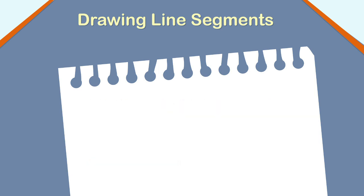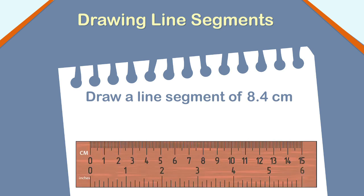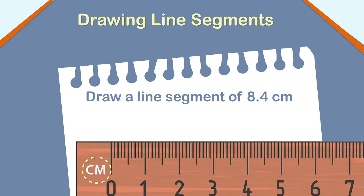Now, let us get a little more complex. Let us see how to draw a line segment measuring 8.4 centimeter. Look at the ruler closely. The ruler has markings in centimeters. Each centimeter is divided into 10 smaller divisions. Each small division is equal to 1 millimeter. So, 1 centimeter equals 10 millimeter.